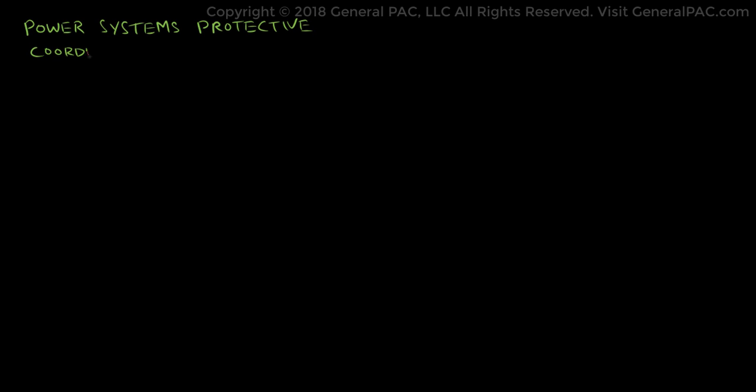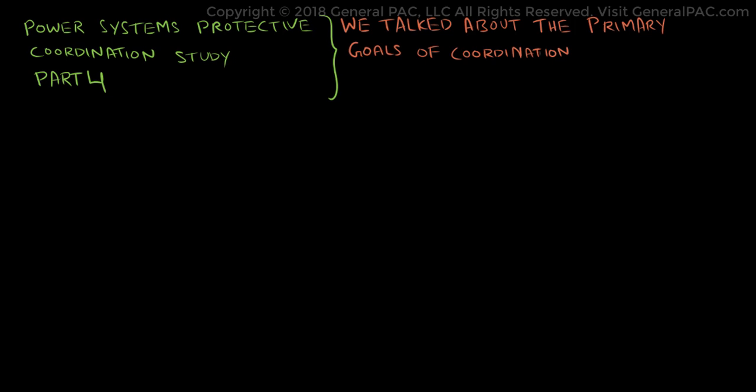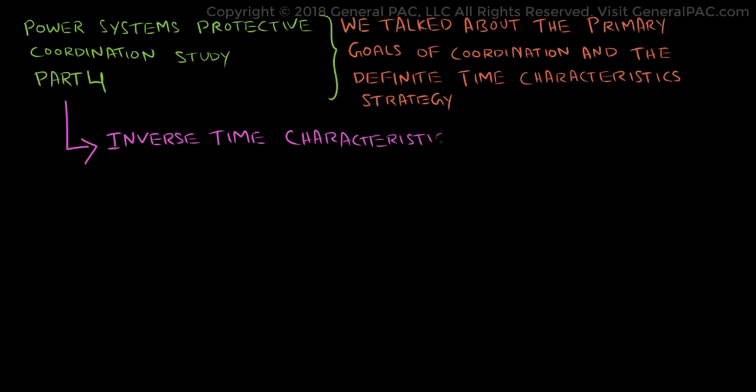Power Systems Protective Device Coordination, Part 4. In Part 3, we talked about the primary goals of coordination and the definite time characteristics strategy. In Part 4, we will be discussing the inverse time characteristics strategy and how we can use it to achieve coordination.